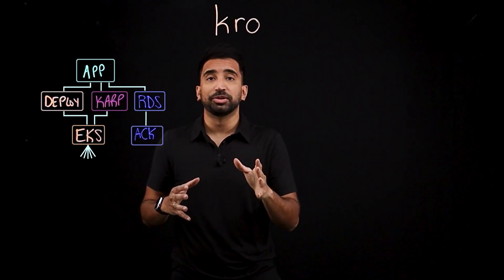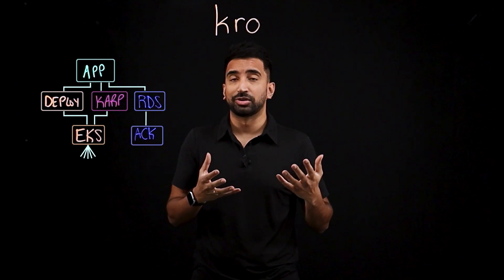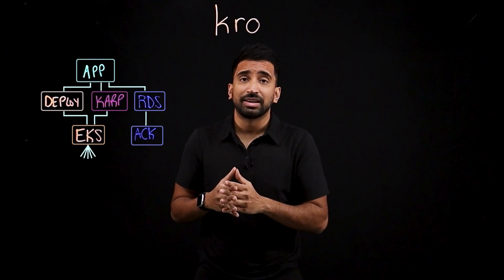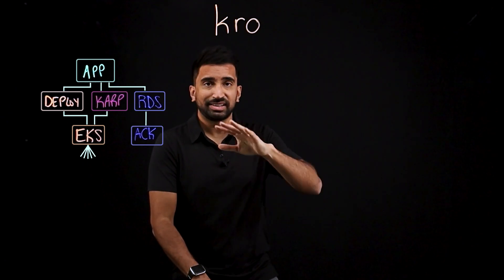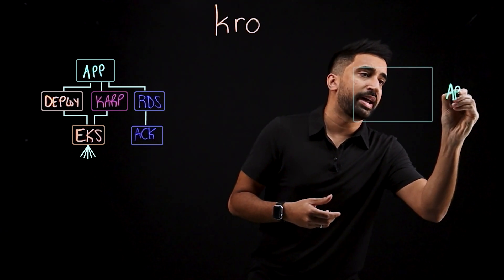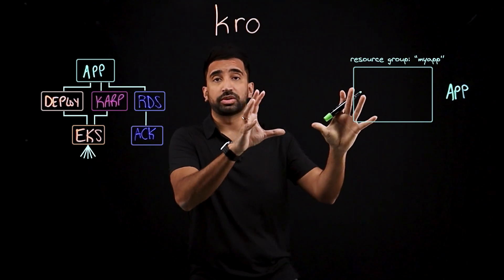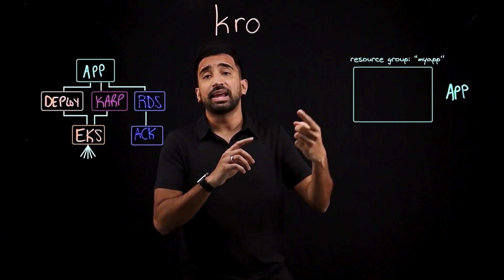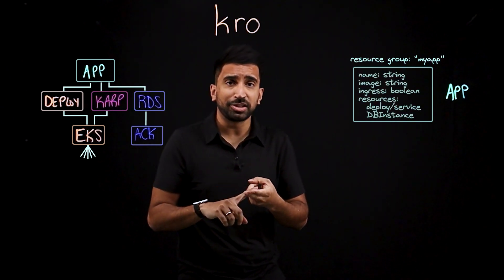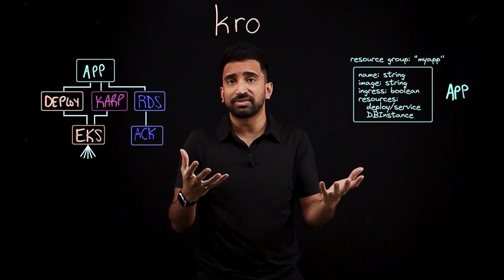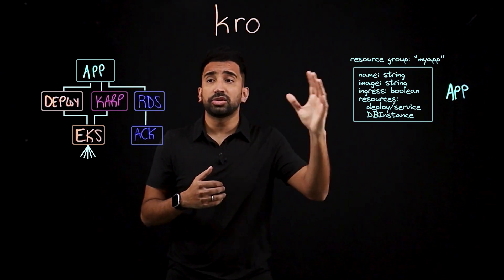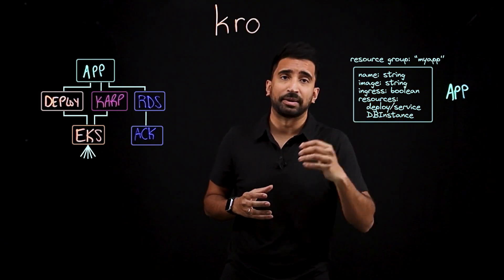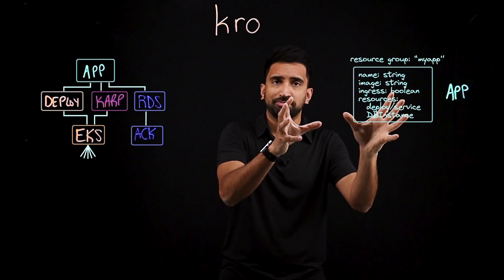By the end of this video, I want you to understand how Crow is different from other similar tools. The first thing is that Crow makes it easier to abstract layers of dependencies. So off the bat, let's say we have an app resource group. The application resource group will have a number of things defined here — things like the name of the application, maybe the image, deployments, services, an ingress configuration for external load balancing, and the RDS DB instance is also defined here.